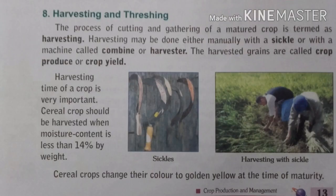The next step of crop production is harvesting and threshing. The process of cutting and gathering a matured crop is termed as harvesting. A matured crop should be harvested when the moisture content is less than 14 percent by weight.